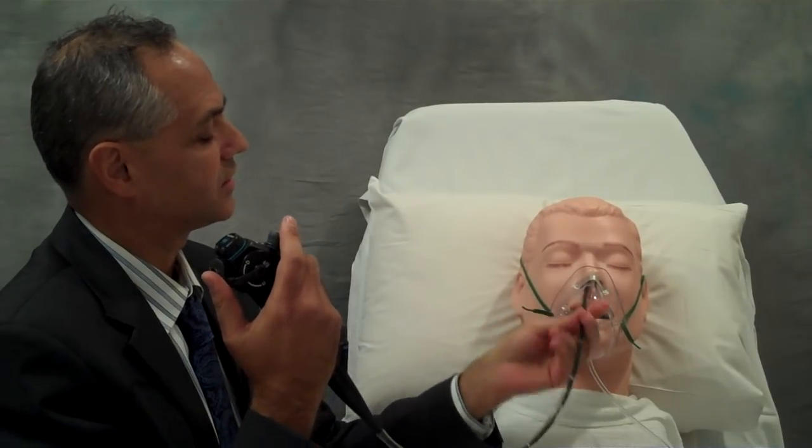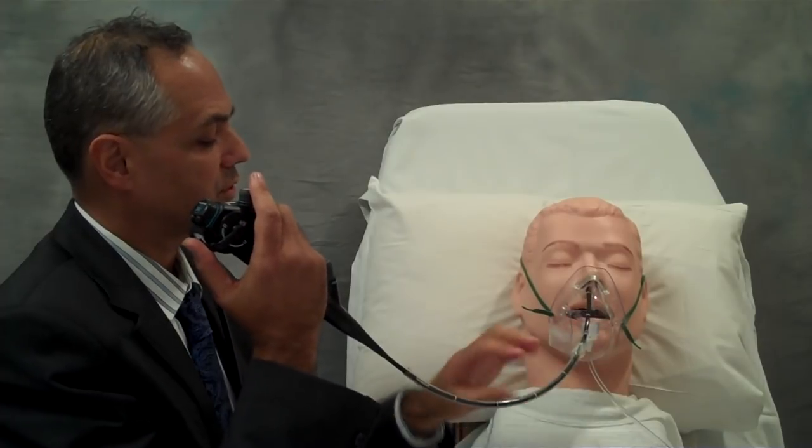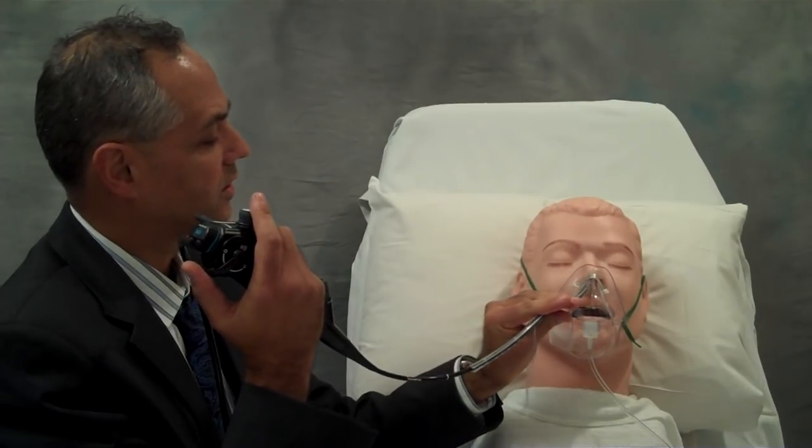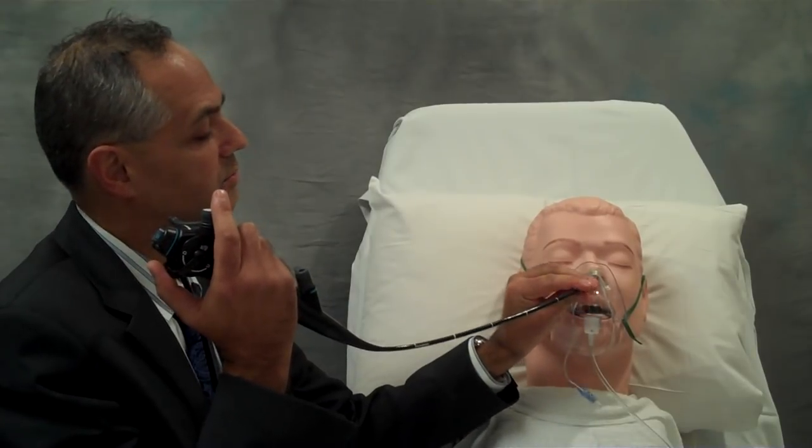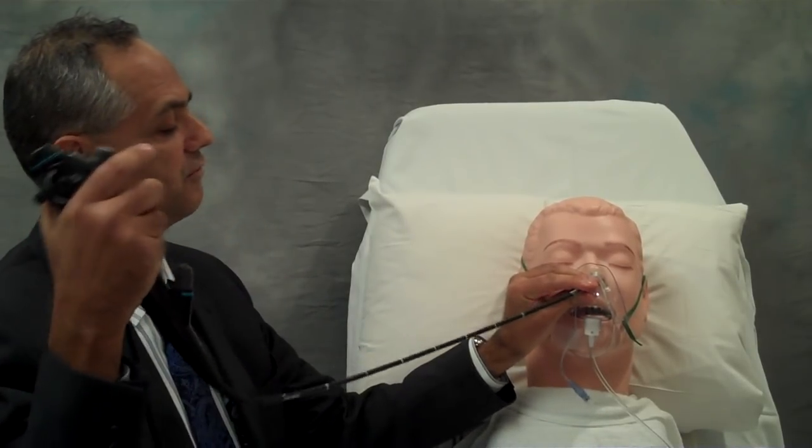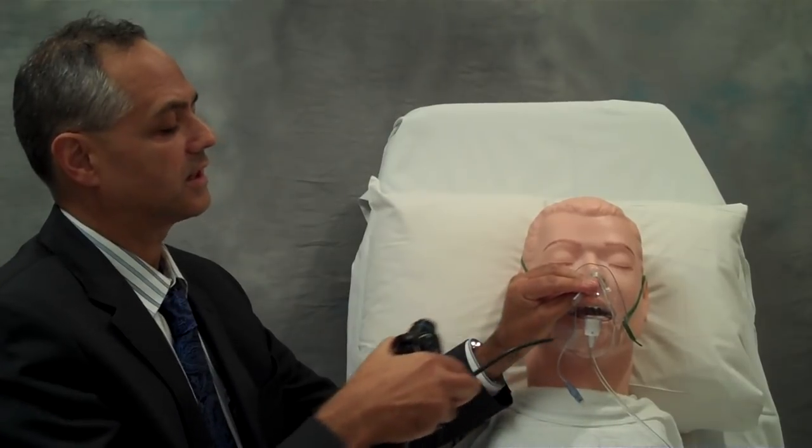The bronchoscope goes down into the hypopharynx, past the vocal cords, and the smaller endotracheal tube is threaded over the bronchoscope into the airway. Once we verify its position inside the airway, the bronchoscope is removed.